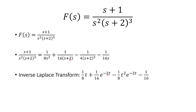Then we have negative 1 fourth, and then it's (s+2)³. We have the 2 here, and we also have to divide it by 2. And then finally we have negative 1 over 16, and the inverse Laplace transform of 1 over s is just 1. So this is the final answer.